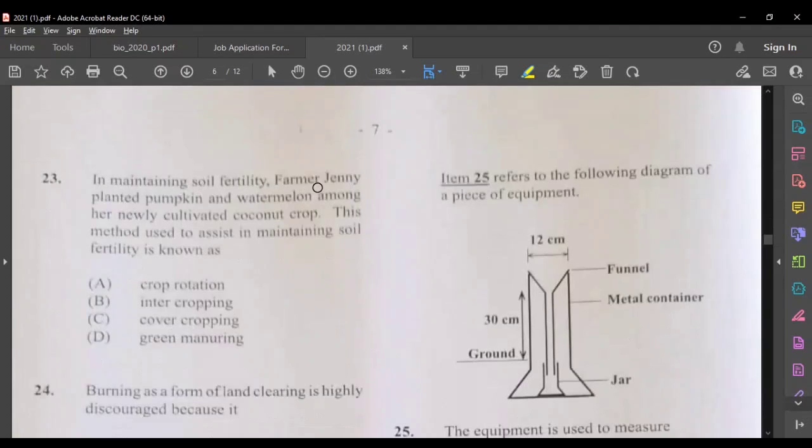Question 23, in maintaining soil fertility, Farmer generally planted pumpkin and watermelon along with newly cultivated coconut crop. This method used to assist in maintaining soil fertility is known as, he's planting pumpkin and watermelon along with coconut crops, so that sounds more like intercropping.